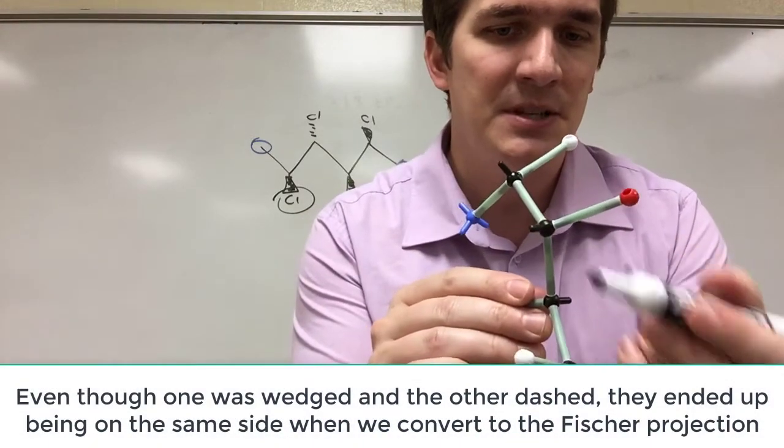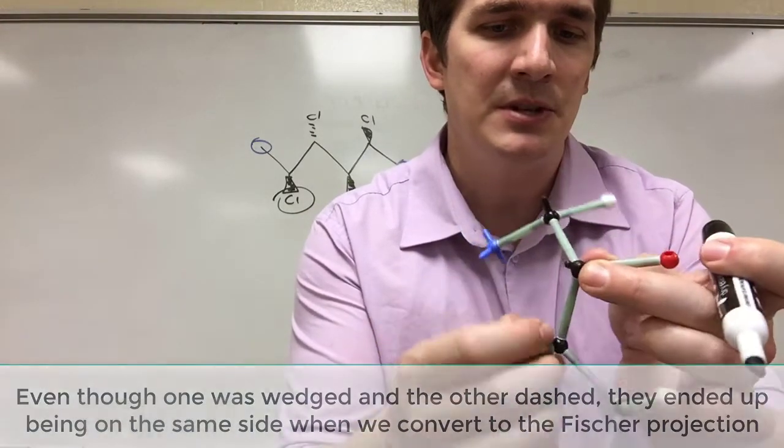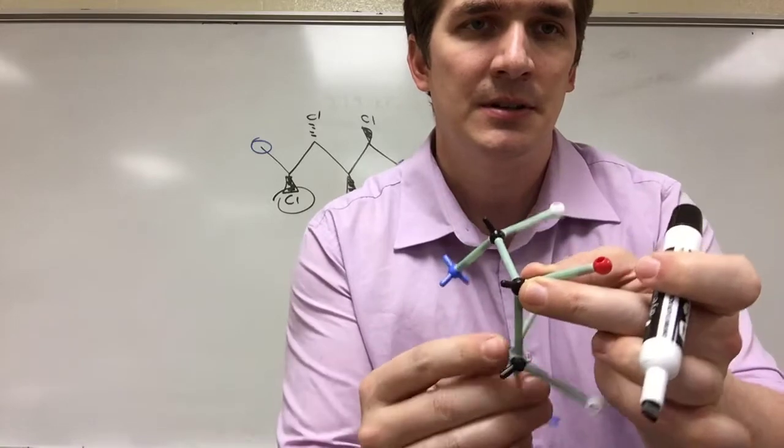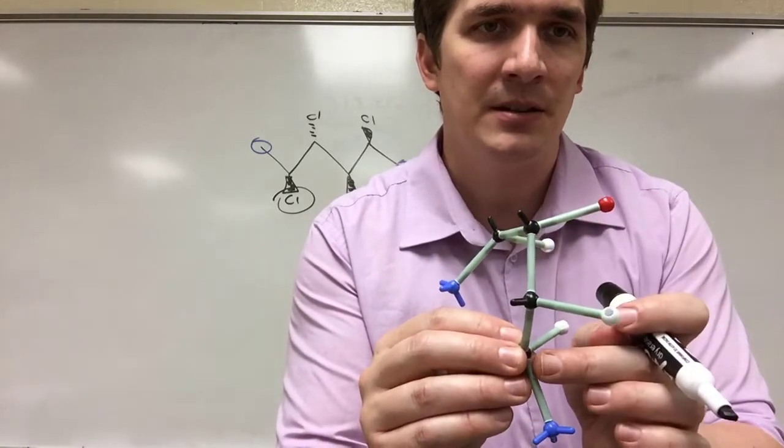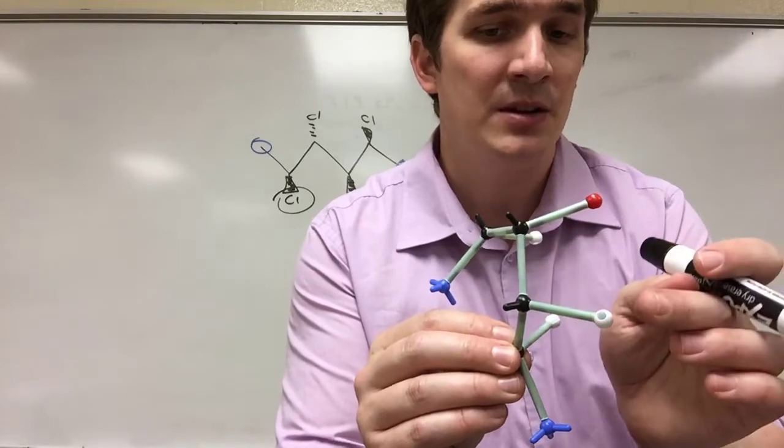If we go to the next one, same problem. This is coming out and this is coming out. So we need to rotate this carbon. So now that carbon's coming out, that carbon's going back, and we've got another chlorine on the right.